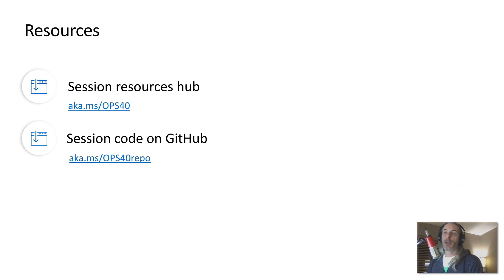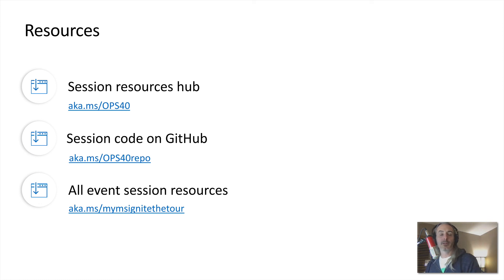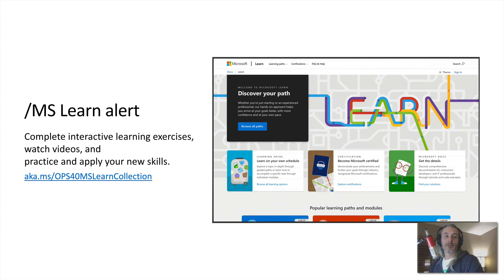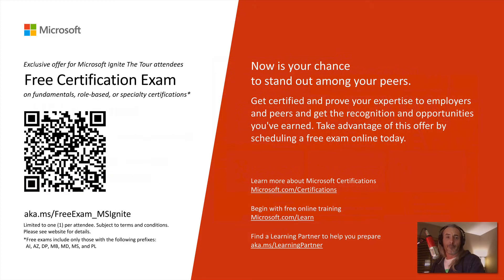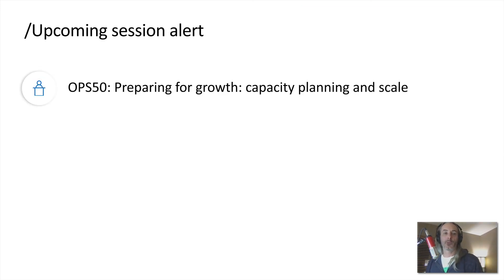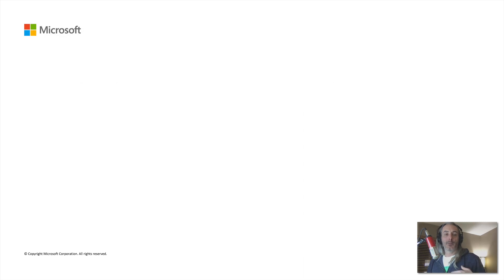Some resources: everything we talked about today is available, including the system you can deploy — the whole Tailwind Traders system. Here are links to download everything you need to get up and running. We also have docs you'll want to check out if you're interested in learning more about Azure Pipelines. There's learn material that has been very helpful, free certification exams, and last but not least one more session coming up in this learning path: reliability, preparing for growth, capacity planning, and scale. Thank you very much, my name is Jason, it's been a pleasure.